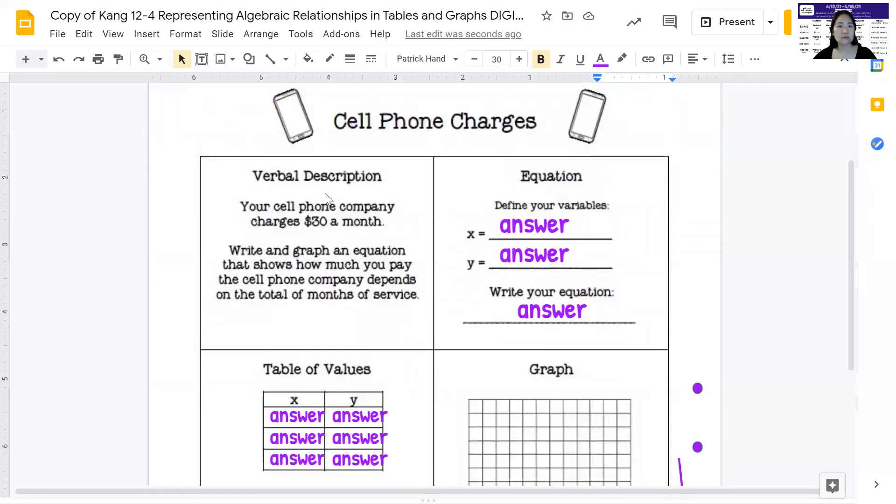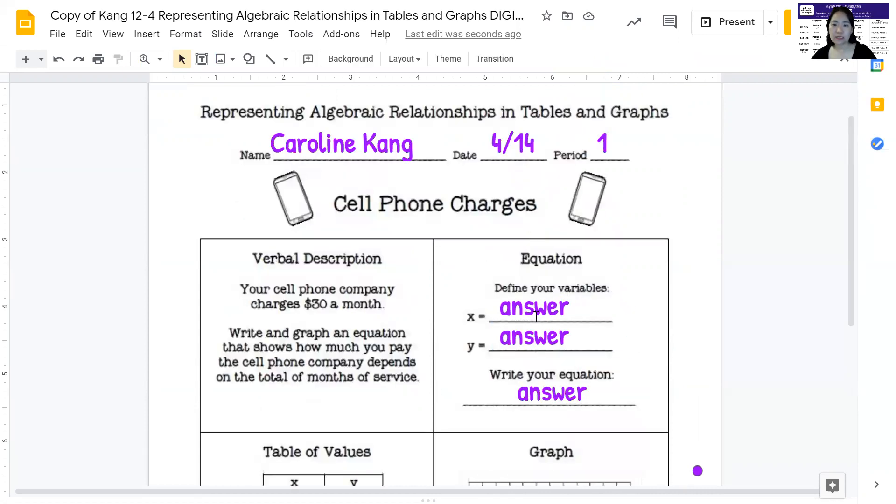All right, so then now I'm going to read the verbal description. It says your cell phone company charges $30 a month. So the units that you're dealing with are $30 and then months, right? One of these, money or the month. One of the two is the X and the other one is the Y. How do you figure that out? Let's actually start with that first. Define your variables.